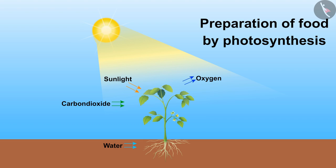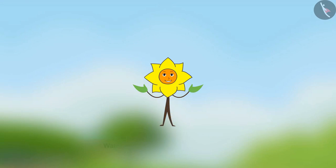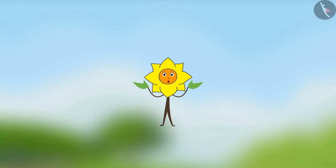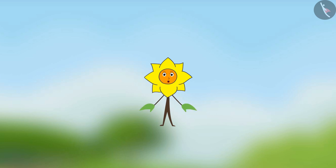All of you must have studied that the green leaves in plants make food by the process of photosynthesis. Similarly, it is important to transport food to the other parts of the plant. To remain alive, we need water also, otherwise we will wither away.